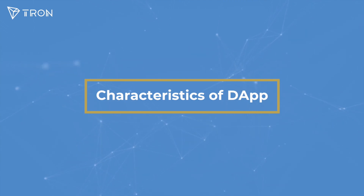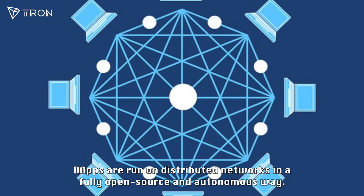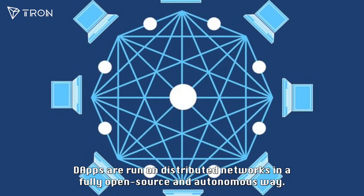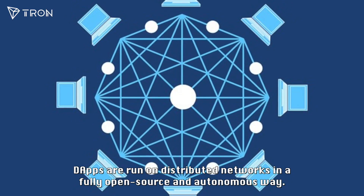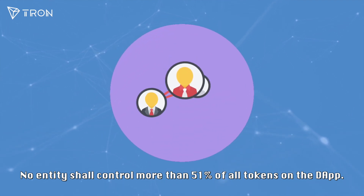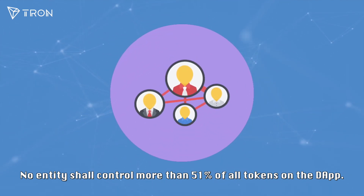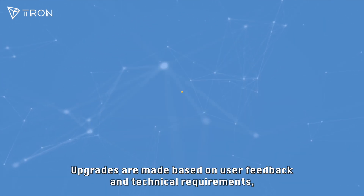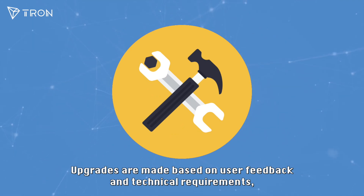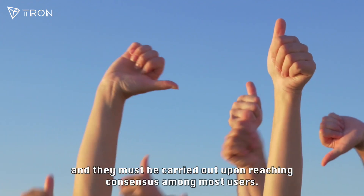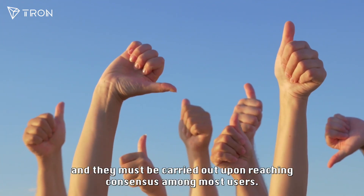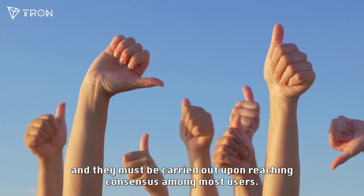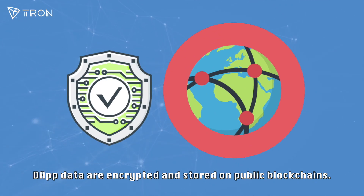Characteristics of dApps: dApps are run on distributed networks in a fully open source and autonomous way. No entity shall control more than 51% of all tokens on the dApp. Upgrades are made based on user feedback and technical requirements, and they must be carried out upon reaching consensus among most users. dApp data are encrypted and stored on public blockchains.